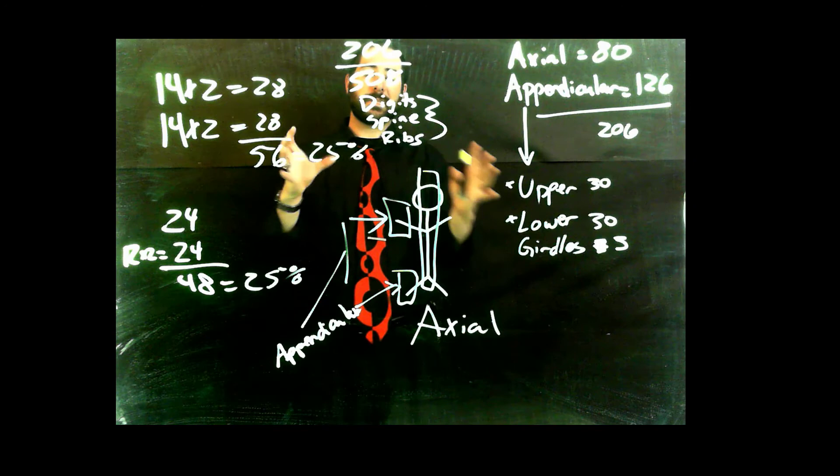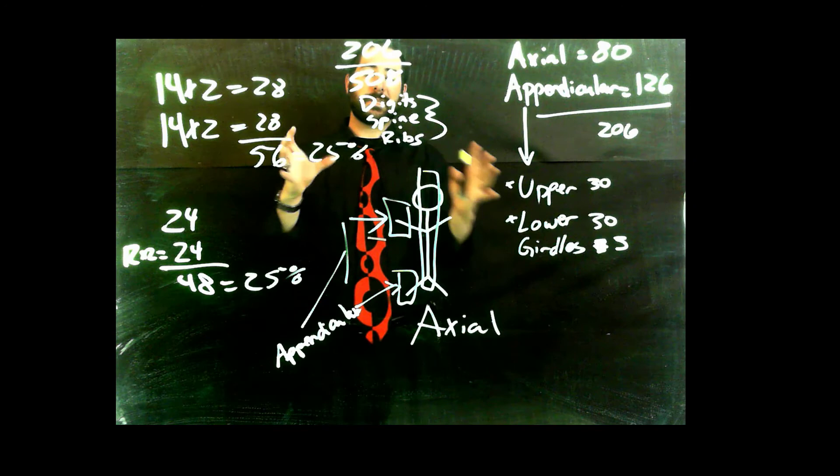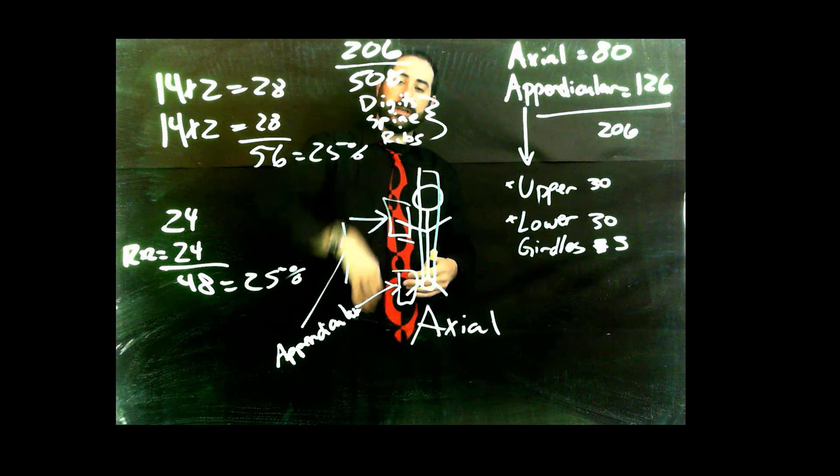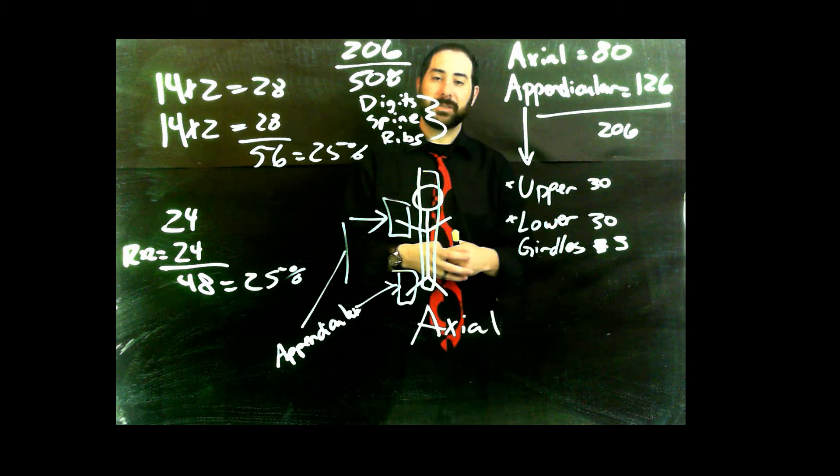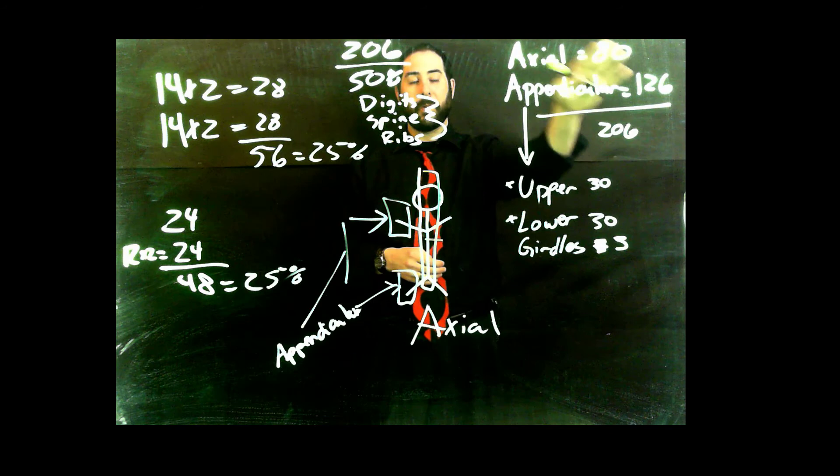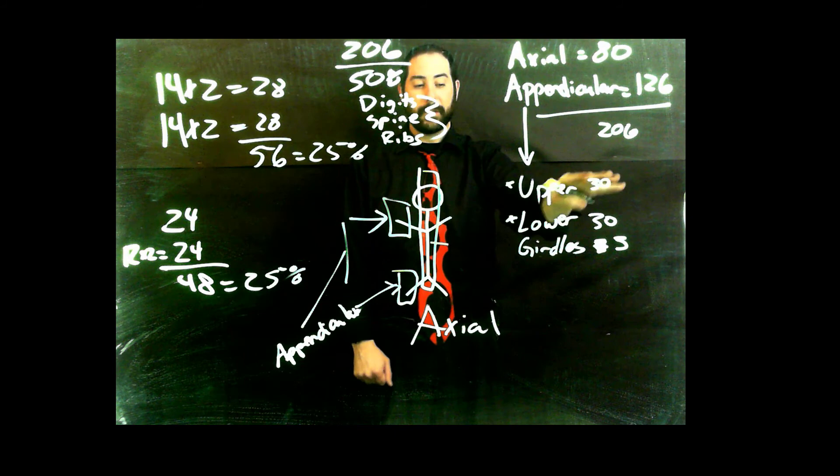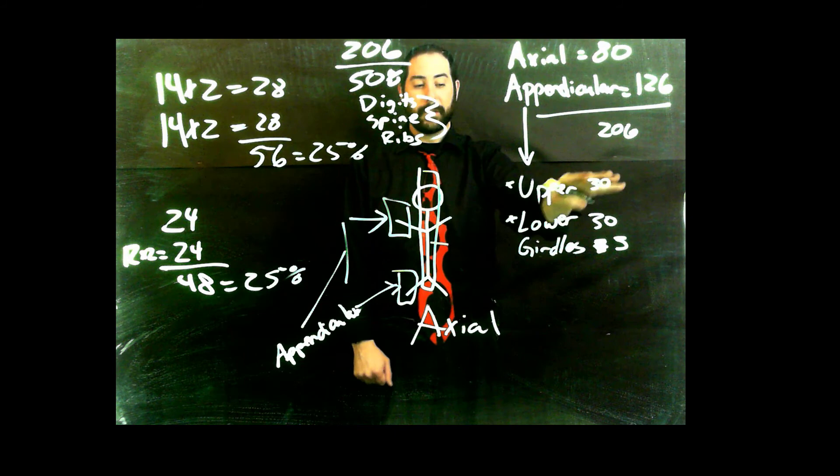So hopefully, even though I know 206 bones are somewhat intimidating, maybe knowing that 50% is in our digits, spine, and ribs, and that we can divide out our axial and appendicular skeleton into these two components. And we know that a large portion of our axial is rib and spine, and then the appendicular can be broken into 30 bones for an extremity, and then those three bones to each side, there's a girdle that holds it on. So, let's go.